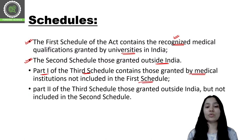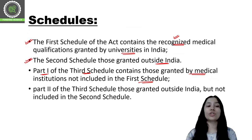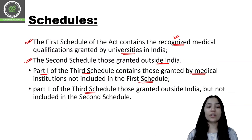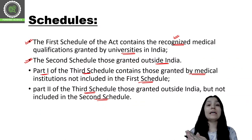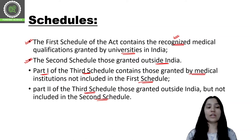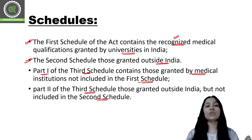Things not entered in the first schedule are entered in part one of the third schedule. Then we have part two of the third schedule, covering those granted outside India but not included in the second schedule. So the third schedule is made up of part one and part two, and essentially mirrors the first and second schedules for cases not included in them.